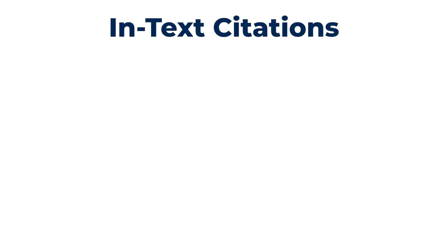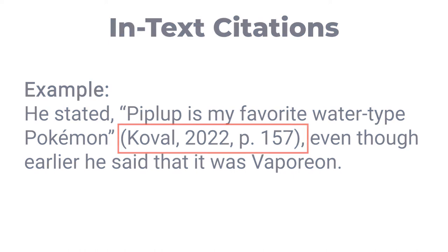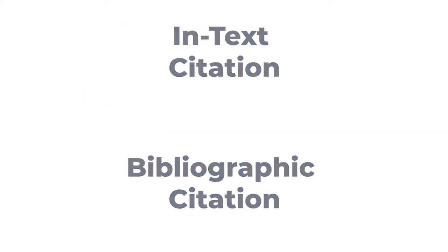Whenever you provide either a direct quotation or specific information, you must provide what's called an in-text citation. An in-text citation is exactly that — a citation that appears right in the text. It's an abbreviated version of the full citation that will appear in your bibliography. That's why all in-text citations must have a corresponding full citation in the paper's bibliography.